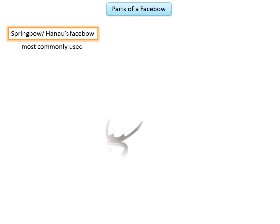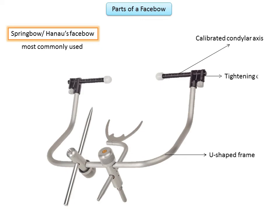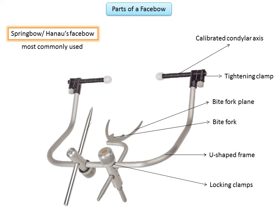The parts of a face bow: Hanao's spring bow is the most commonly used face bow and is constructed with three bars — one anterior and two lateral. It consists of a U-shaped frame with a calibrated condylar axis and a tightening clamp at the end. The bite fork has two extensions (blade) on either side that enter the mouth while taking measurements, with a locking clamp in the center that locks the bite fork to the U-shaped frame. Next to the bite fork is a pointed structure called the infraorbital pointer, which corresponds to a third reference point. Along with the two condylar reference points, it is used to orient the face bow assembly to an anatomical reference point on the face.